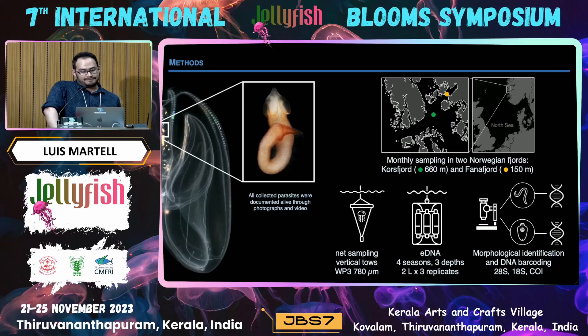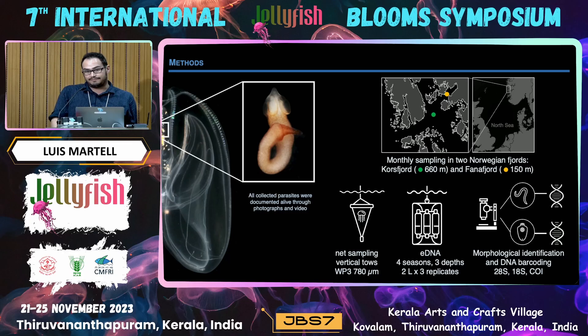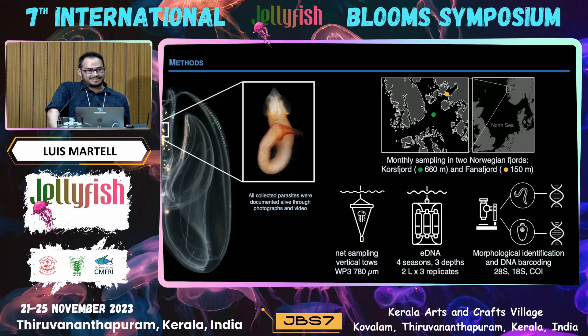Every time we went to these two fjords, we took a net sample vertically from 10 meters above the surface using a modified WP3 net, going very slowly to catch the jellies in the best conditions. We processed everything alive, sorted all the jellies, counted them, identified them, and checked every single jelly for parasites. We counted, identified, and registered the position of all the parasites.